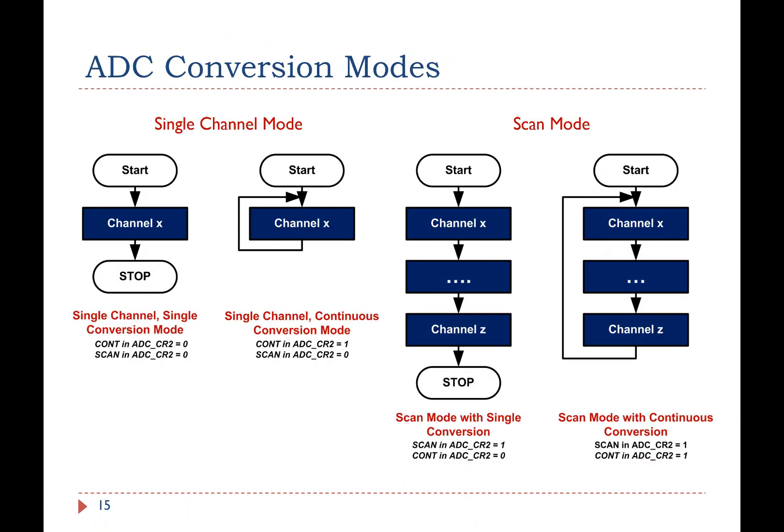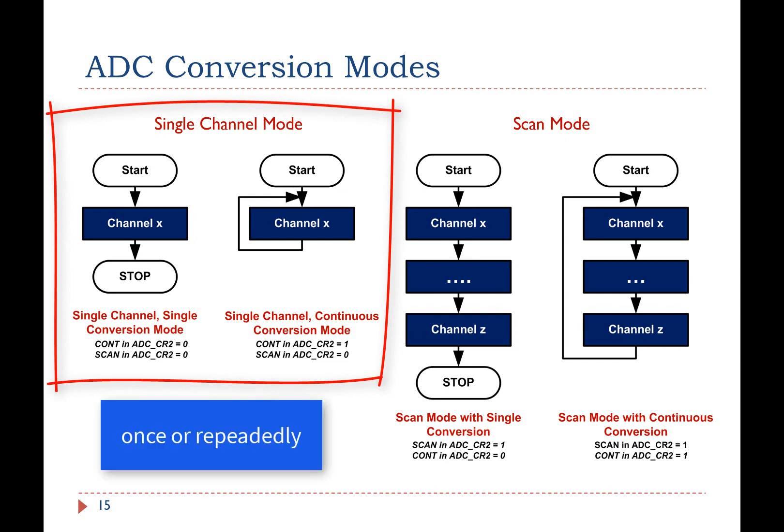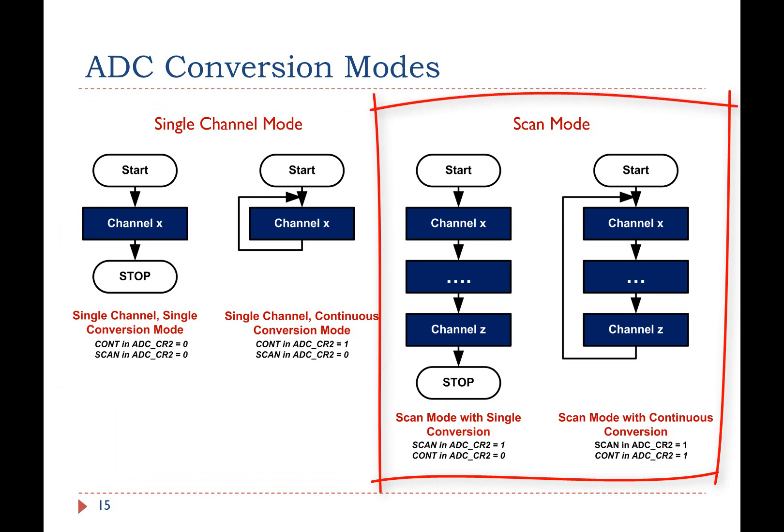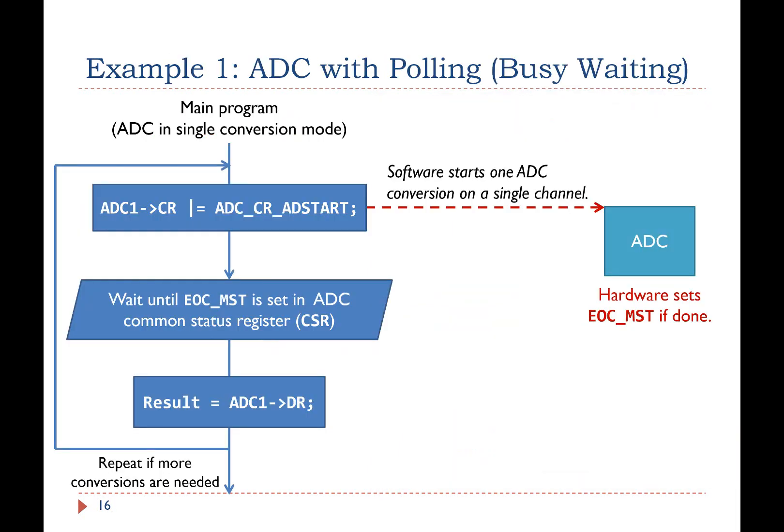We have talked about the fundamentals of ADC hardware. Now, let's see how software should program ADC. The ADC module supports several conversion modes. In the single channel mode, only one channel is converted once and repeatedly. In the scan mode, a set of predefined input channels are sampled once and repeatedly. Software can program the order in which these channels are sampled. The next couple of slides give us four examples of retrieving the conversion results from the ADC data register.